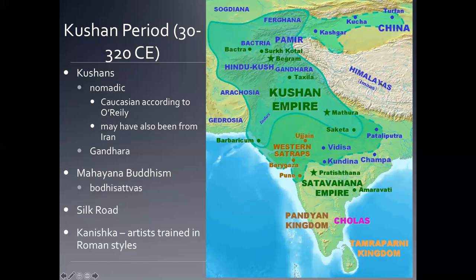Let's move on to later Buddhist art, starting with the Kushan period — this will be the first Buddhist art that actually has images of the Buddha. The Kushans were a nomadic people, possibly from Iran, who ended up in the Gandhara region in what is today northwest India. They practiced Mahayana Buddhism — the Greater Vehicle — with bodhisattvas.